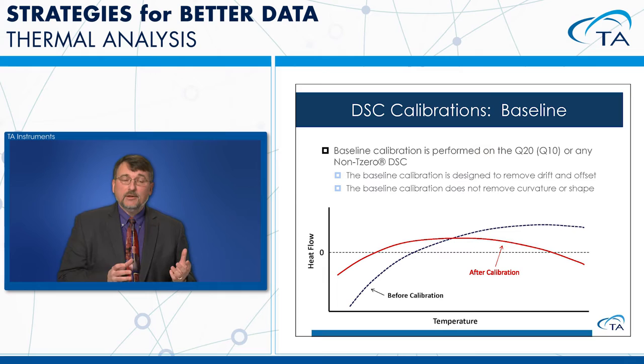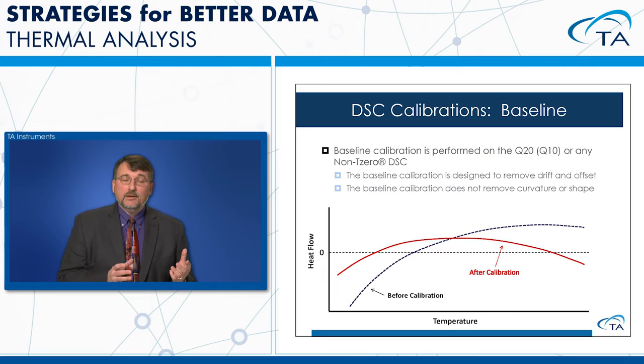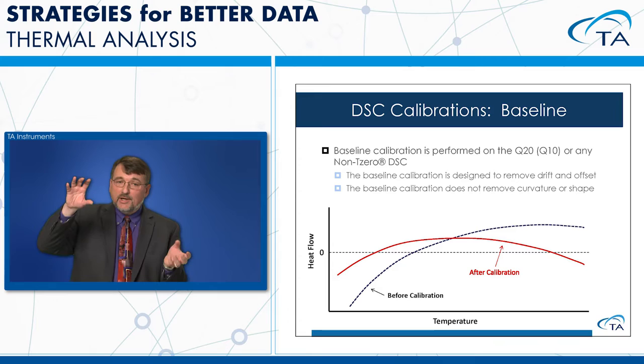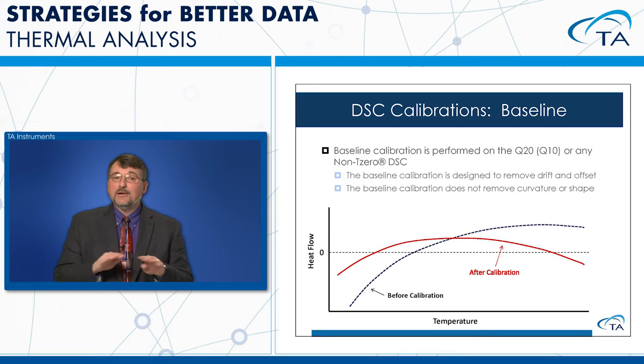The baseline calibration done on non-T0 DSCs like the Q20 corrects for any offset and drift in the baseline. Looking at the graph, the black curve is our before-calibration data. We rotate it around zero to get our calibrated baseline — it still has some curvature, but it's now relatively flat and right around zero.